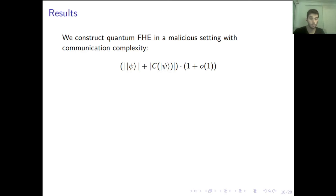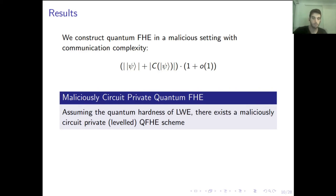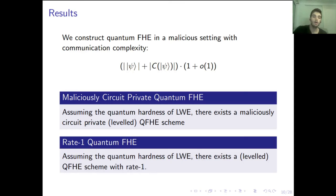We get a quantum FHE in the malicious setting with optimal communication complexity. To do that, we use a combination of two main technical steps: first, we construct a maliciously circuit-private quantum FHE, and then we construct a rate-1 quantum mechanism. These results can be of independent interest, but they are also compatible with each other, so we can combine them to get our main result.